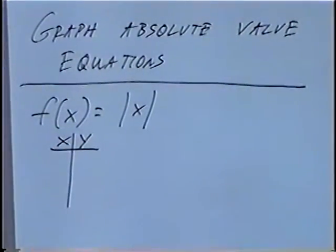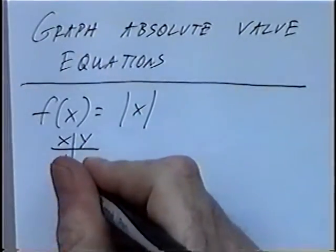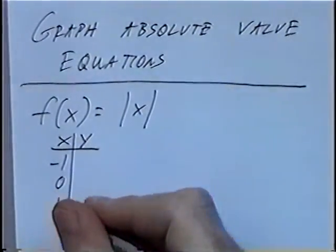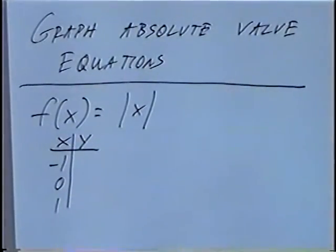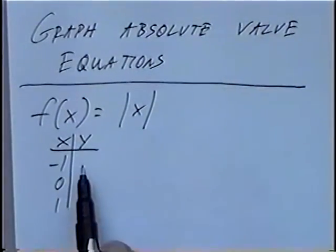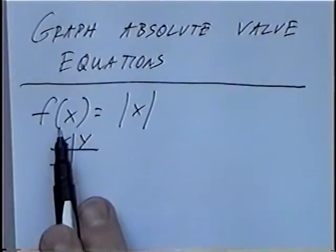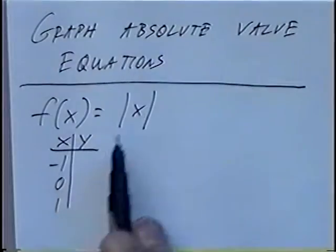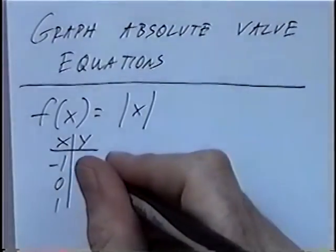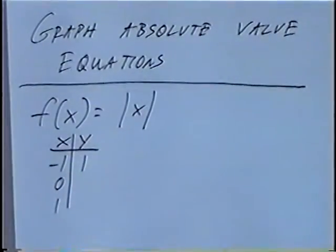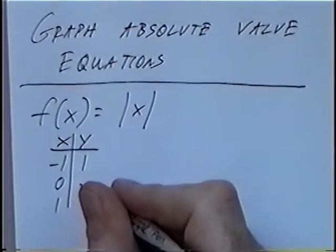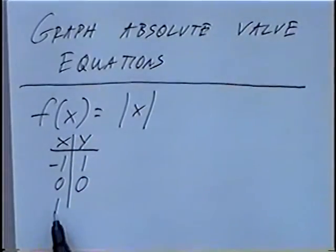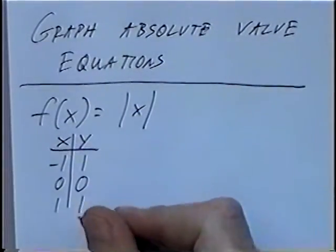Using the x-values — you can use any values that you want — the best ones to use for this case will be negative 1, 0, and 1. Plugging the numbers in for x, we can find out what the value of y is, which is also the same as the function of x. The Absolute Value of negative 1 would be positive 1, the Absolute Value of 0 would be 0, and the Absolute Value of 1 would be 1.